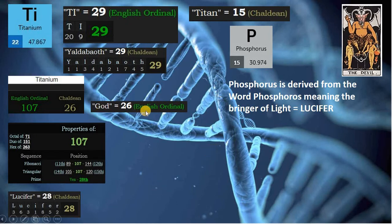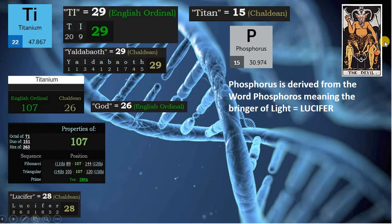Titanium is 15 in Chaldean, matching element phosphorus, whose name is derived from phosphorus, meaning the bringer of light, and refers to Lucifer. 15 is also the Devil tarot card.